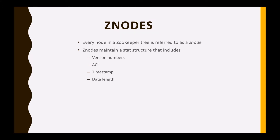So what are these? Version number — every Z node has a version number, which means every time the data associated with the Z node changes, its corresponding version number is also updated or increased.